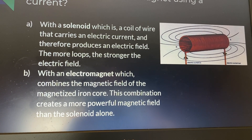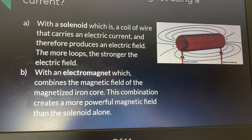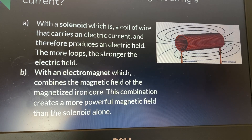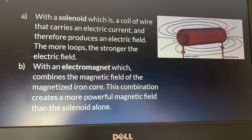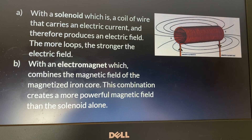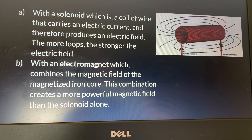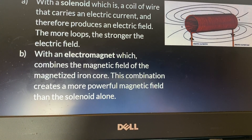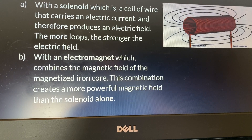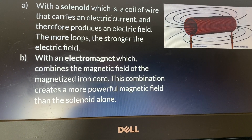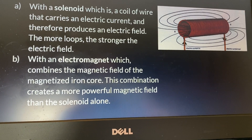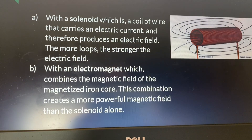With an electromagnet, which combines the magnetic field of the magnetized iron core with the solenoid, this combination creates a more powerful magnetic field than the solenoid alone. So when you use an electromagnet, it produces a much more powerful magnetic field.